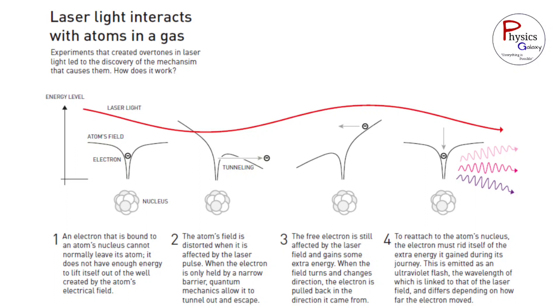And in the third case, the free electron is still affected by the laser field and gains some extra energy. When the field turns and changes direction, the electron is pulled back in the direction it came from. Now in the fourth case, to reattach to the atom's nucleus, the electron must rid itself of the extra energy it gained during its journey. This is emitted as an ultraviolet flash, the wavelength of which is linked to that of the laser field and differs depending on how far the electron moved.